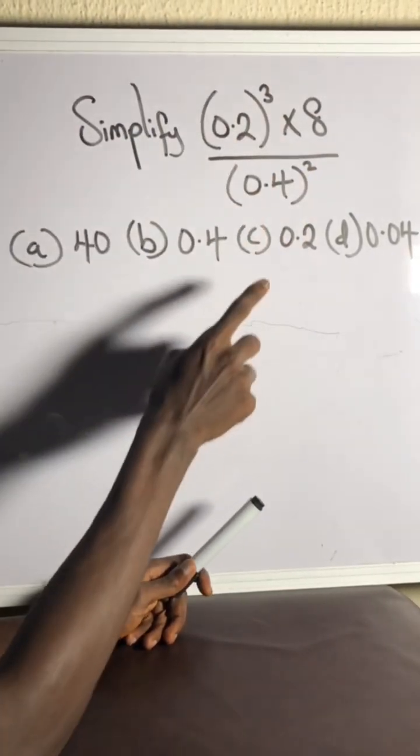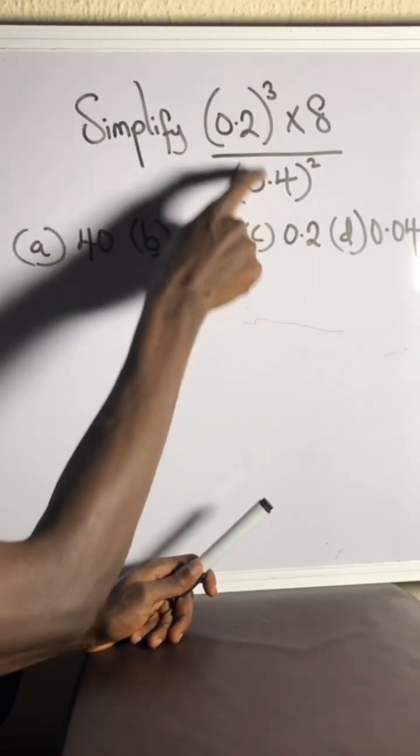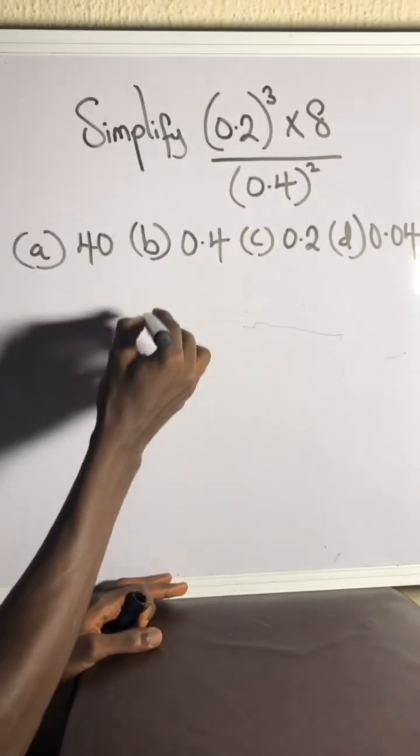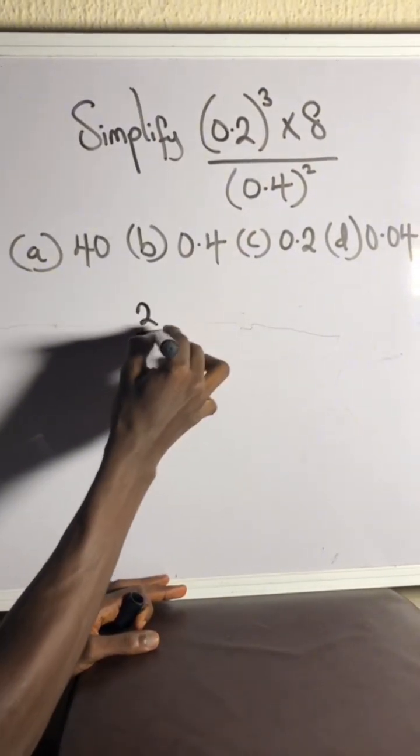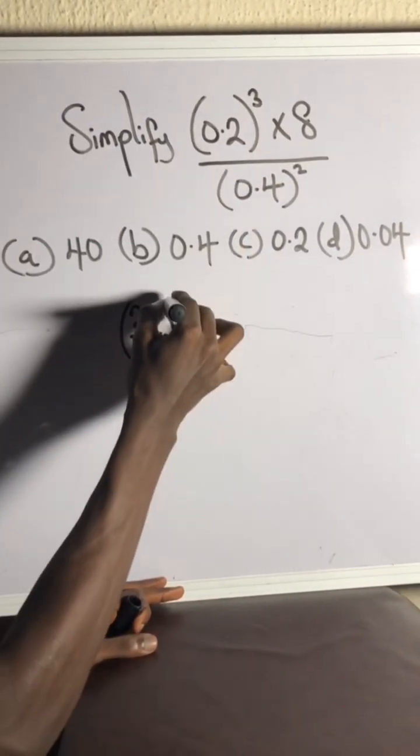Simplify this, okay. So the first thing is you change those decimals to fractions. Alright, 0.2 is the same as 2 over 10 and then you have cubed.